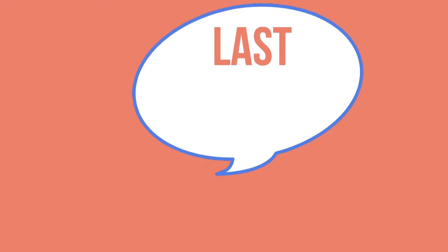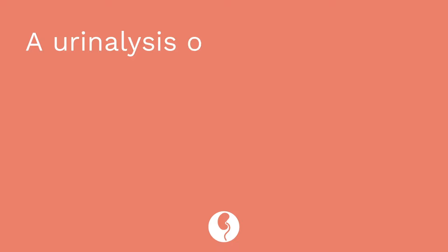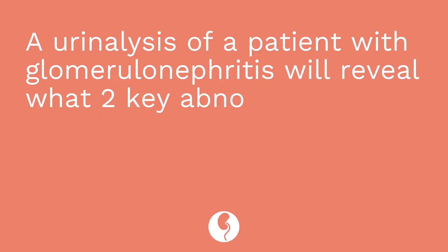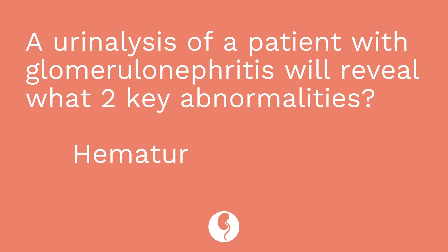Question number three: a urinalysis of a patient with glomerulonephritis will reveal what two key abnormalities? The answer is hematuria and proteinuria. If you said an elevation in urine-specific gravity, you're not wrong, but really the key attributes of this disorder include blood and protein in the urine.